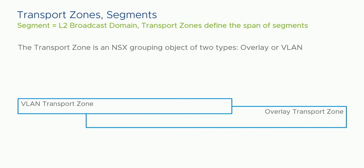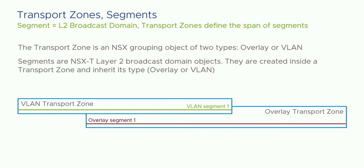Inside a transport zone, there are two types: an overlay transport zone and a VLAN transport zone. Within a transport zone, you can create objects called segments. If you create a segment in a VLAN transport zone, it becomes a VLAN segment. If you create a segment in an overlay transport zone, it becomes an overlay segment by inheritance.